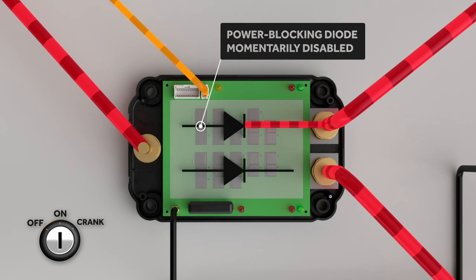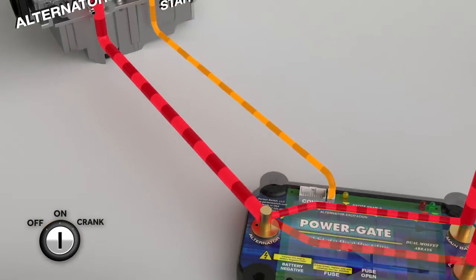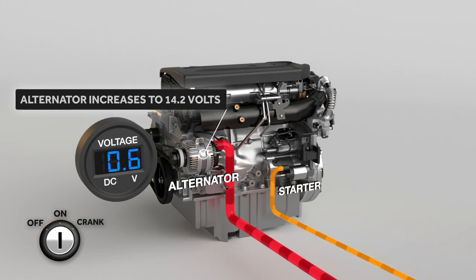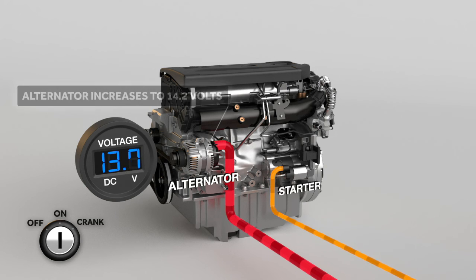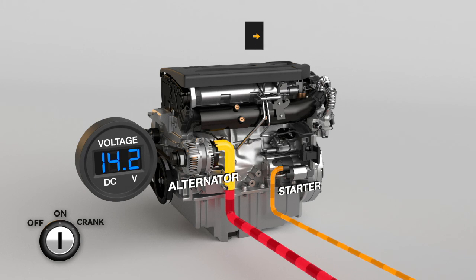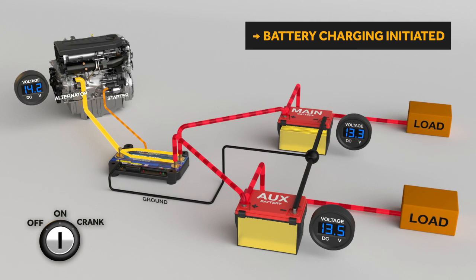We momentarily turn off power blocking between the main battery and the upstream alternator. With battery voltage present, the alternator's regulator instantly excites causing power generation. Power flows from the alternator through the dual rectifier to the downstream batteries.